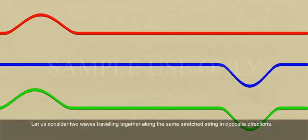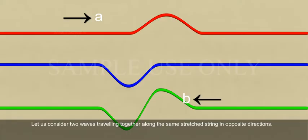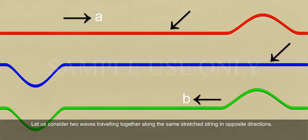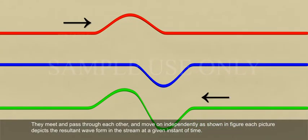For example, let us consider two waves travelling together along the same stretched string in opposite directions. They meet and pass through each other and move on independently as shown in figure. Each picture depicts the resultant waveform in the string at a given instant of time.